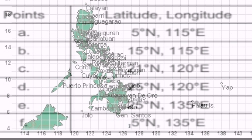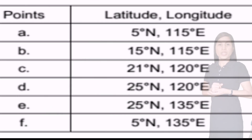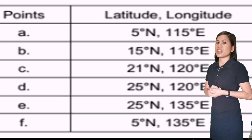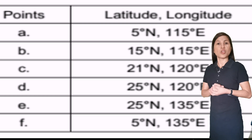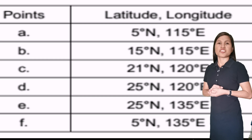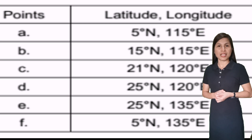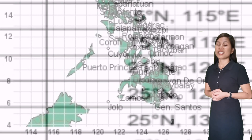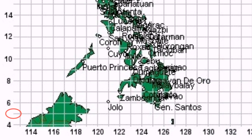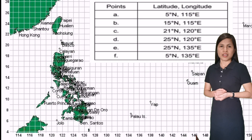Going back to the location of the Philippine Area of Responsibility, we are going to use these points with the corresponding values of latitude and longitude on a tracking chart. I will plot point A first, and we will do the remaining points so that you will know how to plot the Philippine Area of Responsibility. 5 is here while 115 is located here, so the point where 5 and 115 meet is point A.